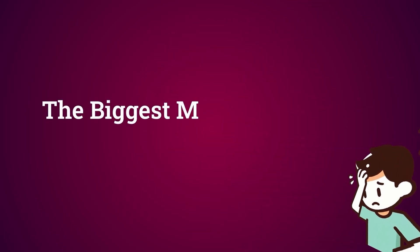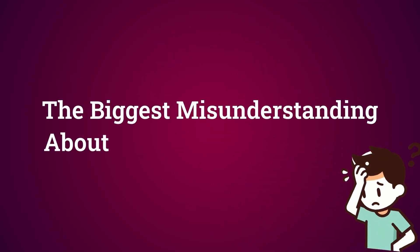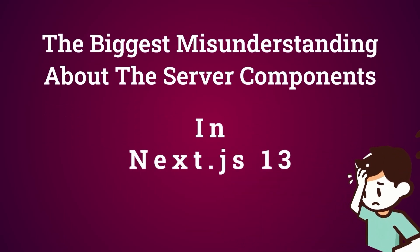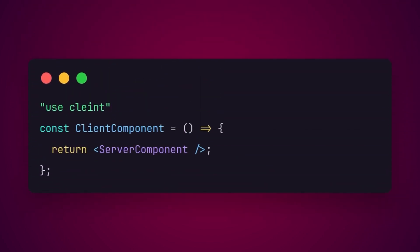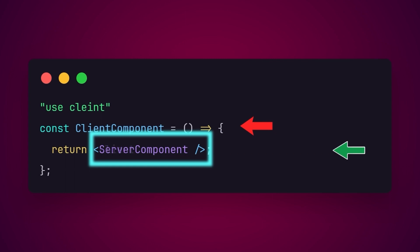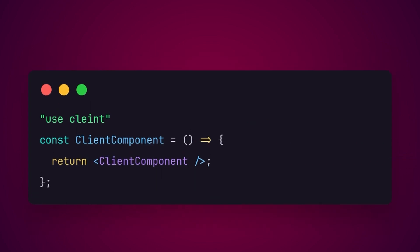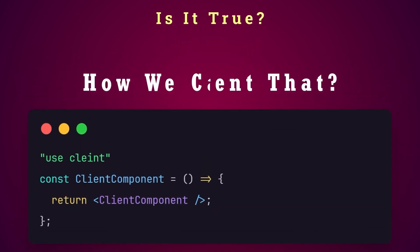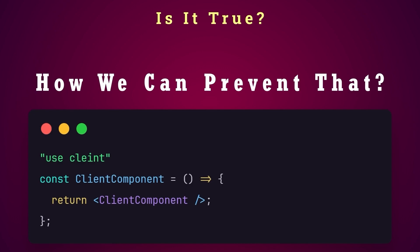This is the biggest misunderstanding of server components in Next.js version 13. Using a server component inside a client component turns it into a client component. Do you think that is true? And if that's the case, how can we prevent that?